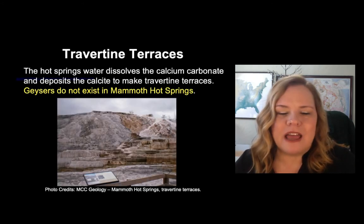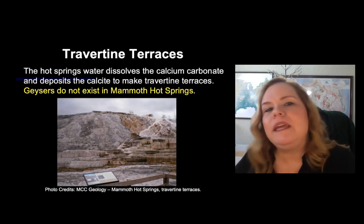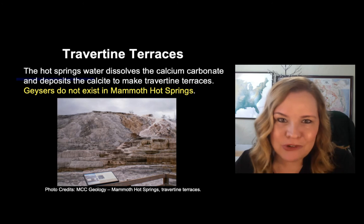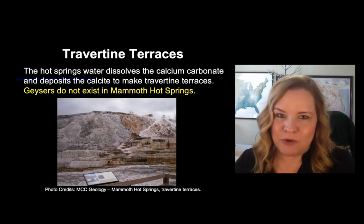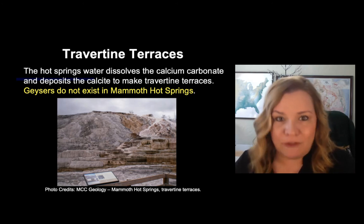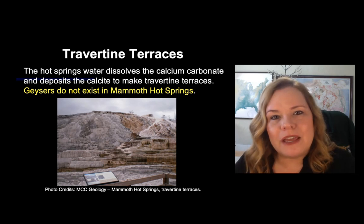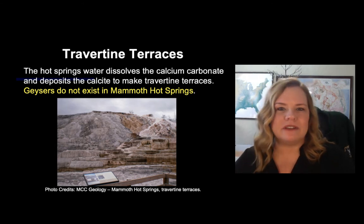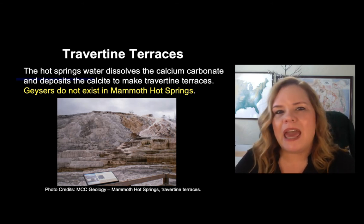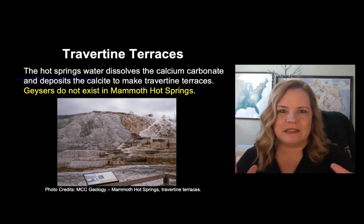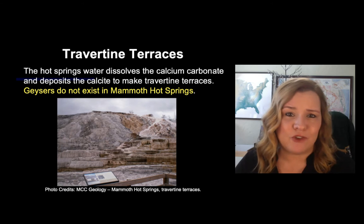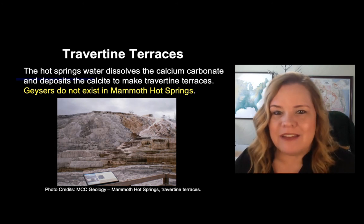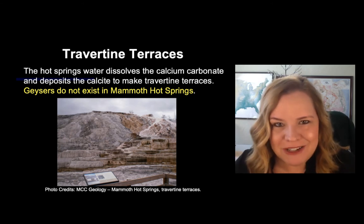Mammoth Hot Springs does not have rhyolite — that is why there are no geysers there. It's a no-geyser zone. Instead, you have other thermal features such as hot springs. For hot springs to form travertine terraces, the water dissolves the calcium carbonate in the limestone and deposits calcite on top to make a new deposit called travertine — just re-precipitated limestone. Geysers don't exist in the most northern part of Yellowstone because the geology is not right.